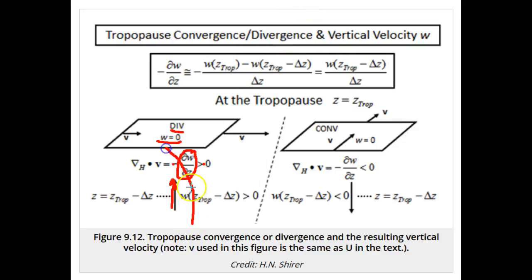On the other hand, if there is convergence in the air near the tropopause, then the air must go down and the vertical velocity w must be negative.